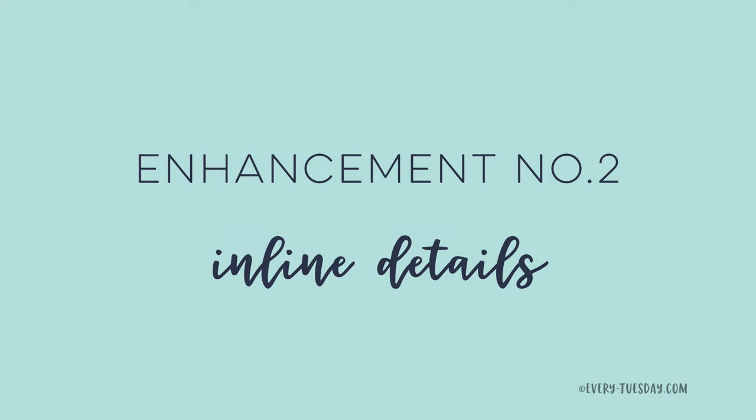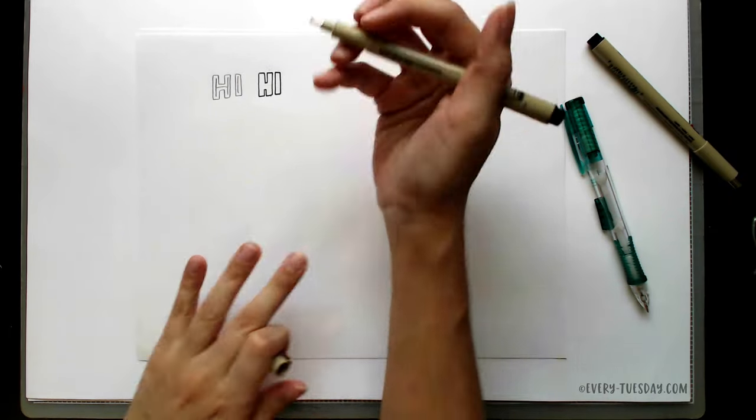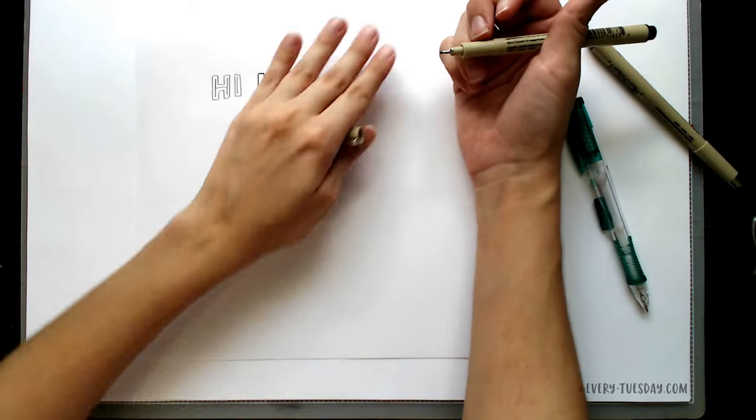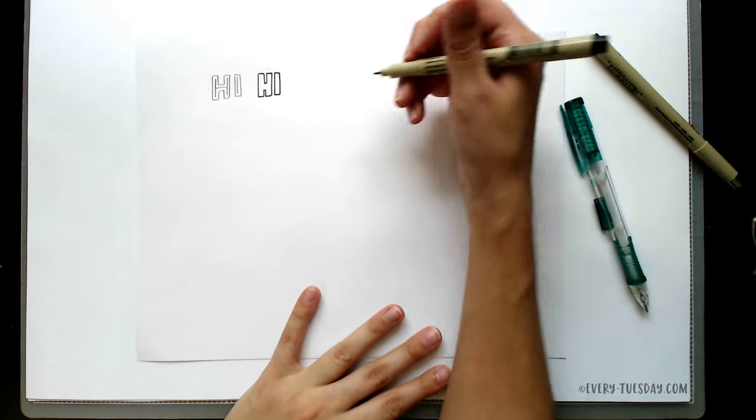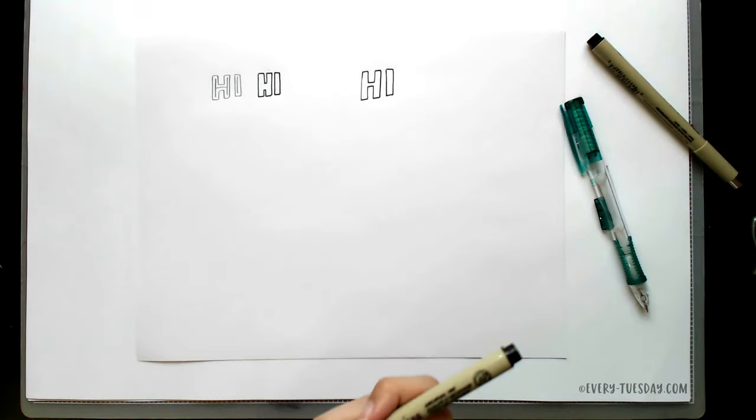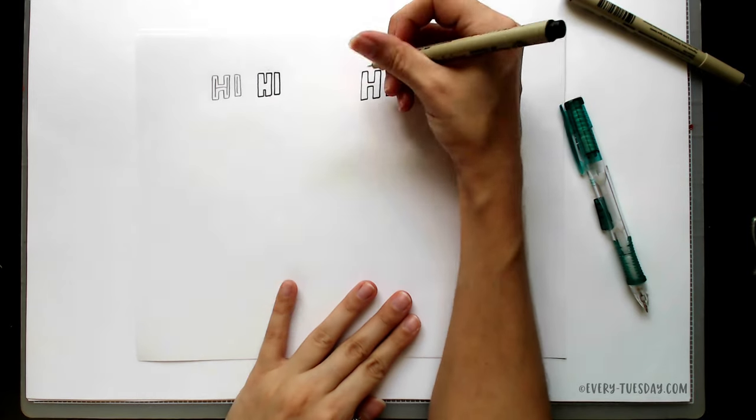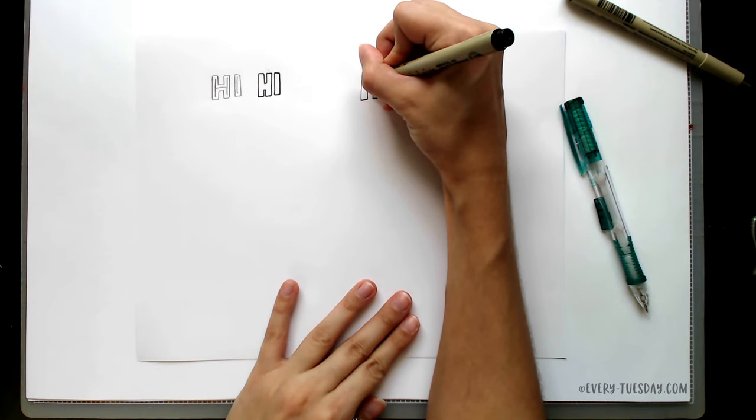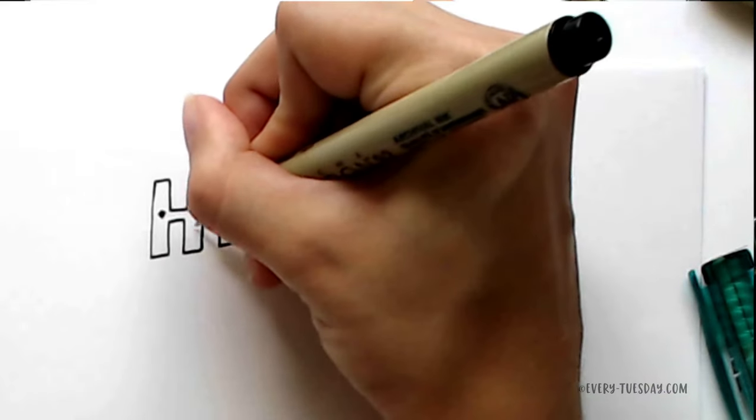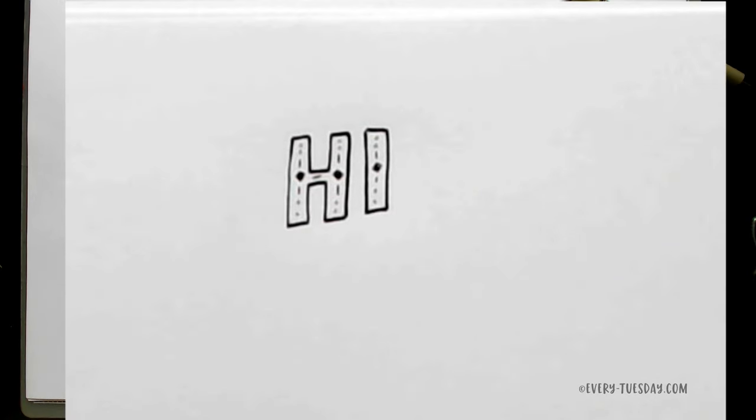Number two is inline detail. Now that we've got this blockier look, we can draw another one. You can go through the steps of creating it perfectly blocky, but if you feel comfortable or confident in just creating it from scratch, you can go ahead and do that. For inline details, I usually go to a thinner weight pen, and then you're just going to draw in some doodles or decoration on the inside to embellish or enhance your lettering. That's number two, inline details.